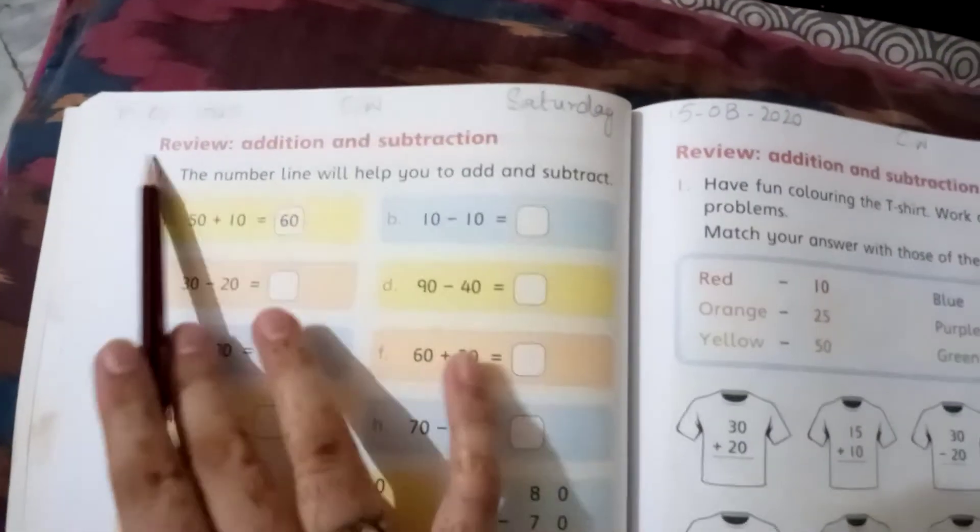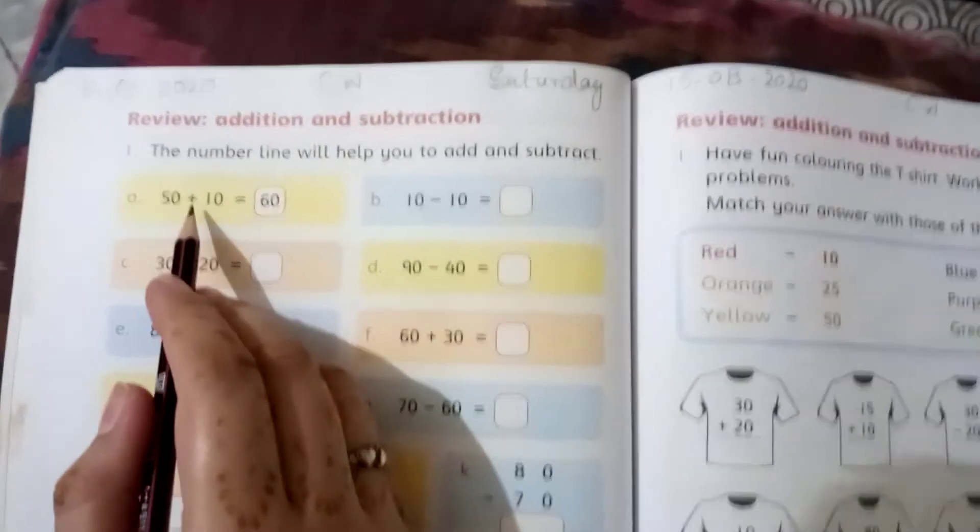Come to the next page, page 84. Again you will write date 15-8-2020, classwork, and Saturday on this page. You will do addition and subtraction here. Now, what do we need to do? It's simple.